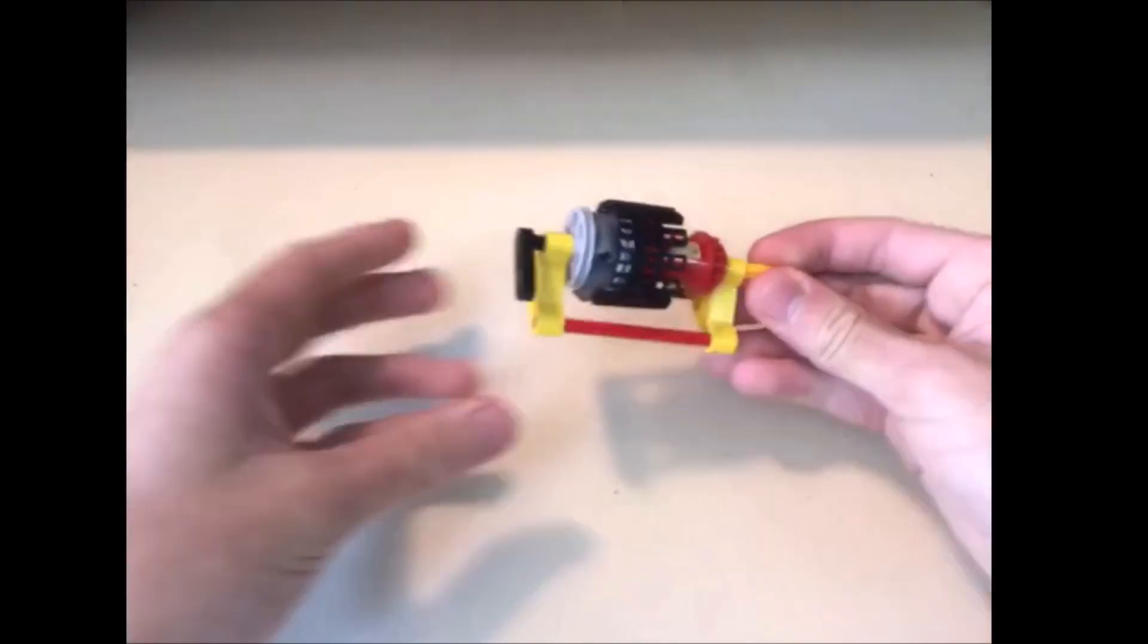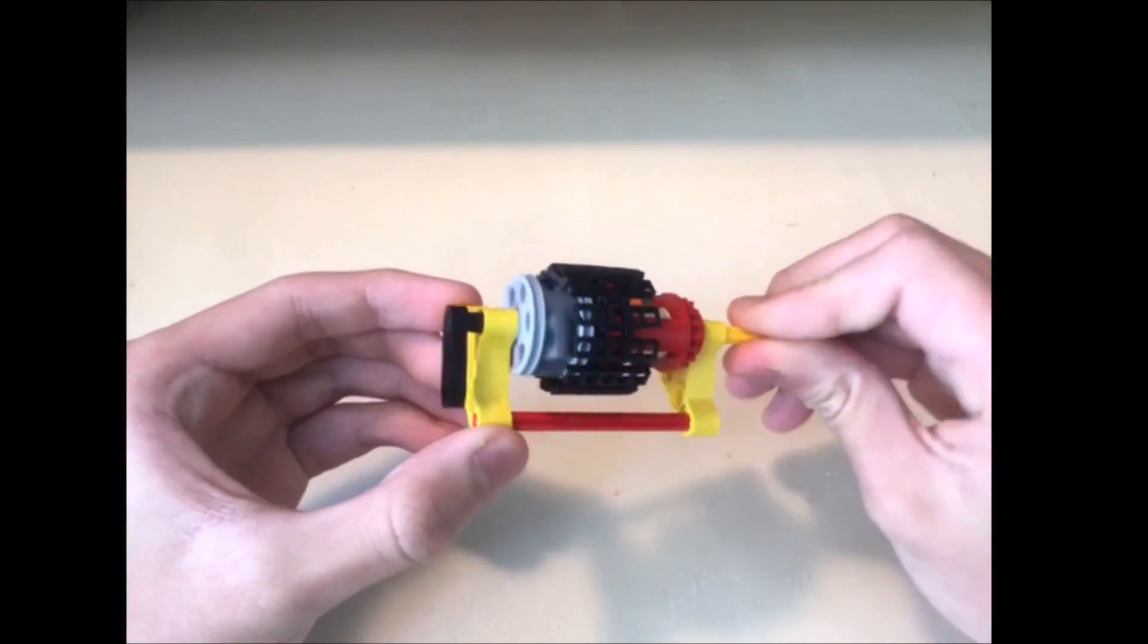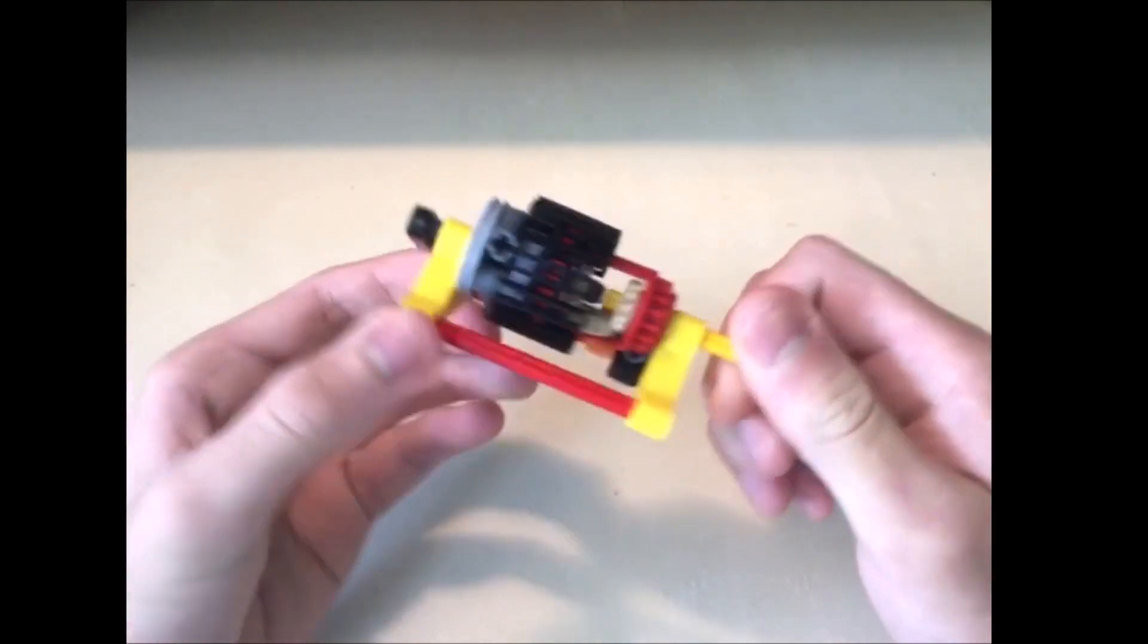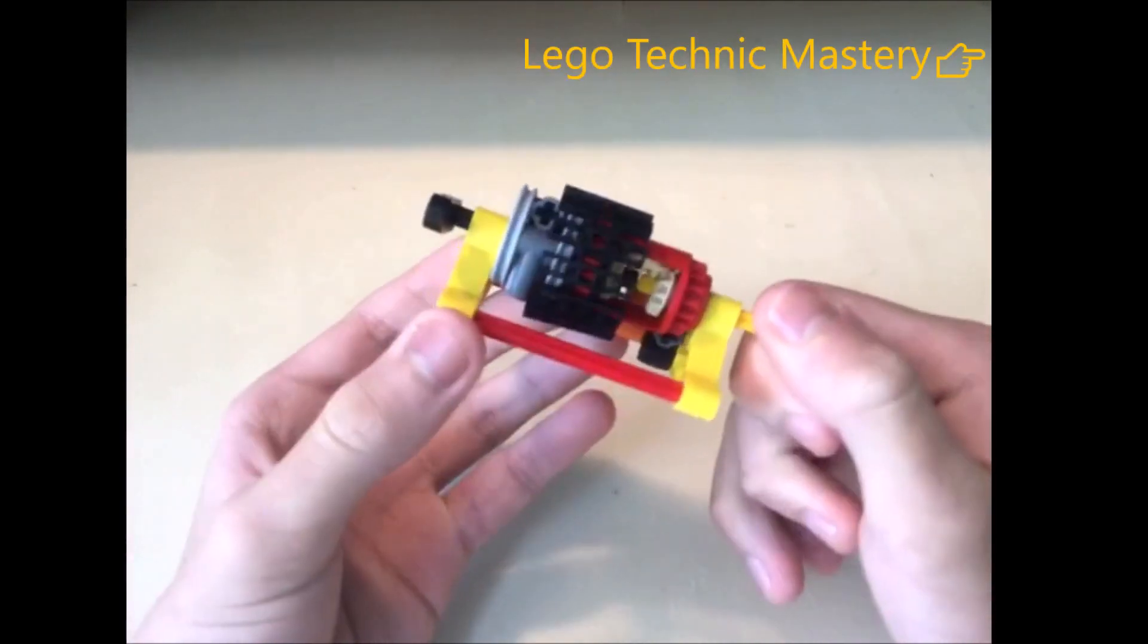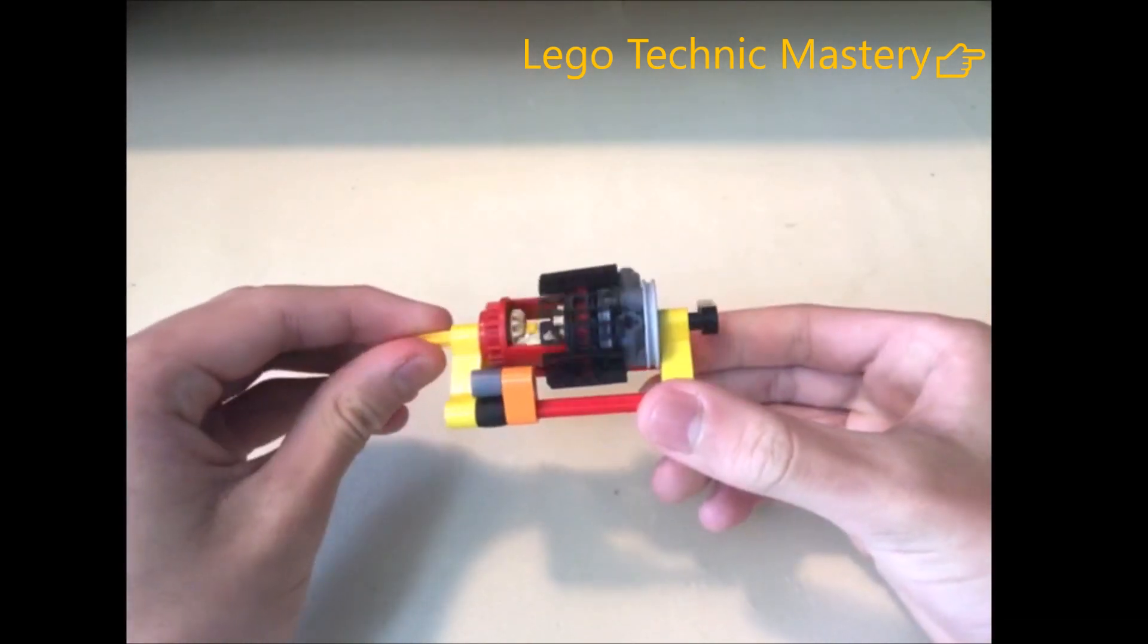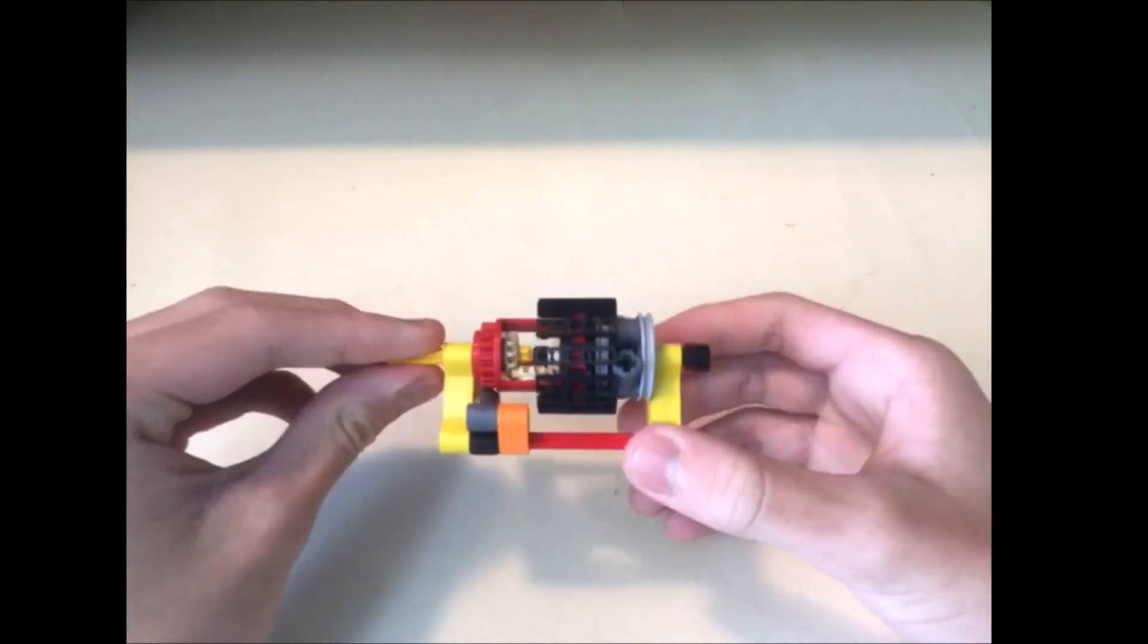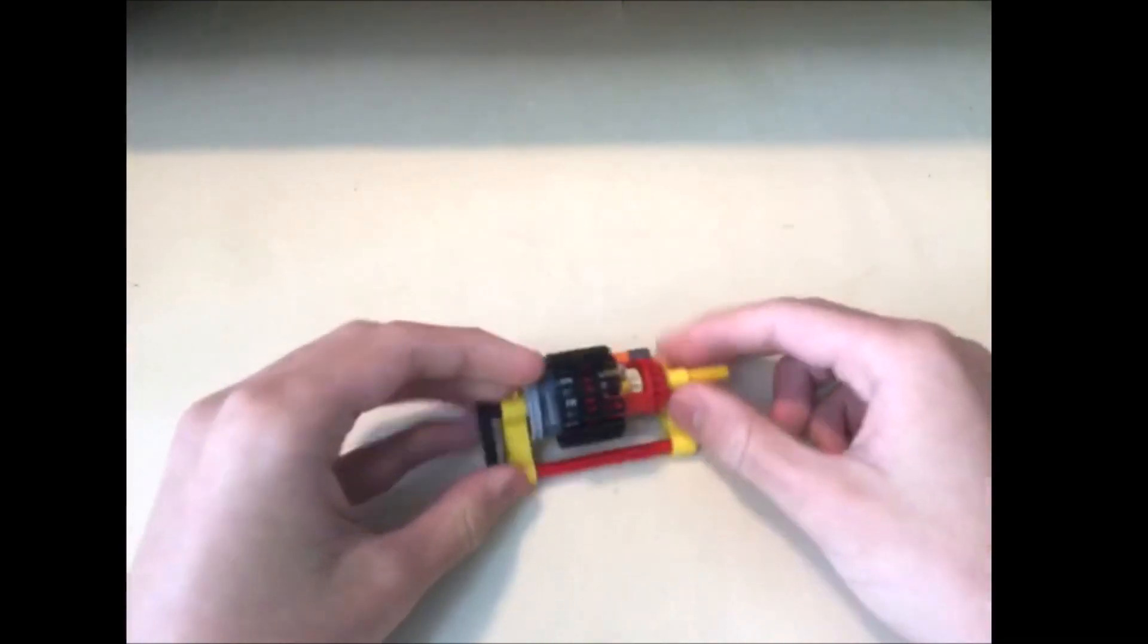Okay, so now, I'll show you the second one. The second one is also a 2-way to 1-way rotation converter gearbox. You might know, this is a creation from LEGO Technic Mastery, which created a lot of cool mechanisms. And he designed this gearbox, and now I'll tell you how this mechanism works.